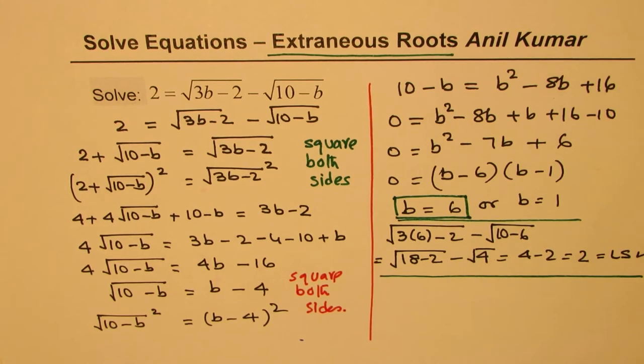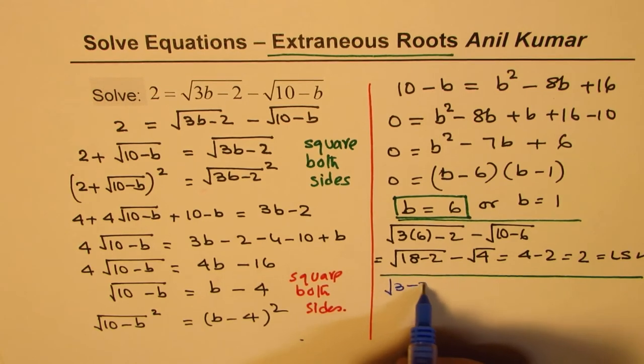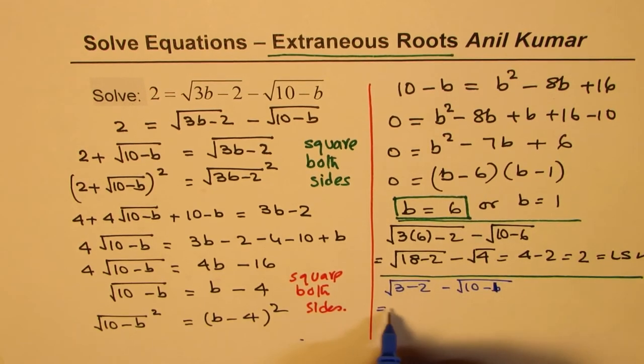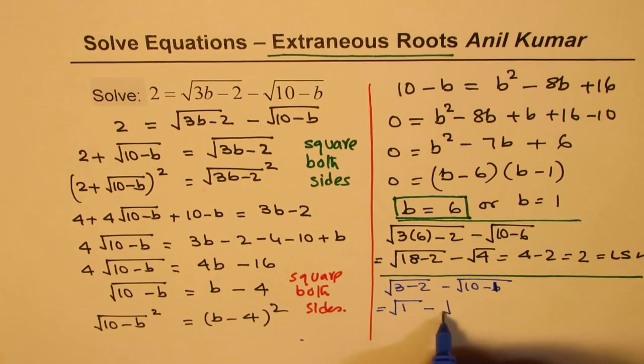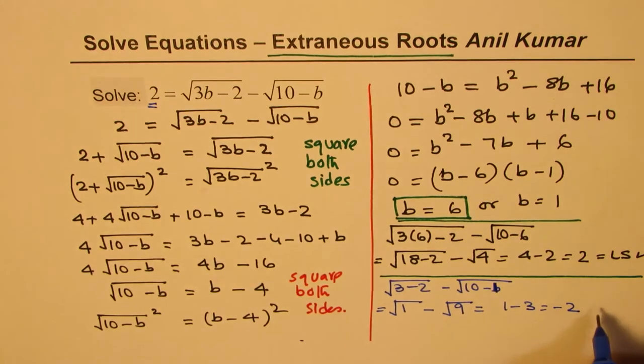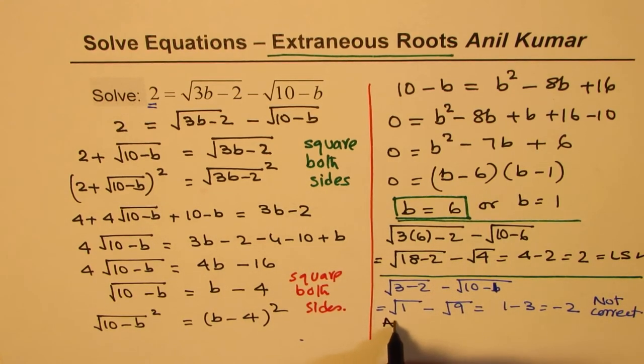Now let us also substitute b equals 1. Square root of 3 minus 2 minus 10 minus b. So that gives us square root of 1 minus square root of 9. So that gives us 1 minus 3 as minus 2. We are looking for plus 2, so that is not correct.